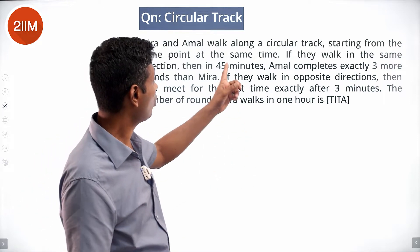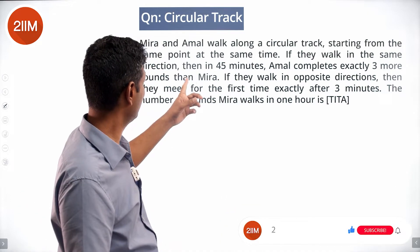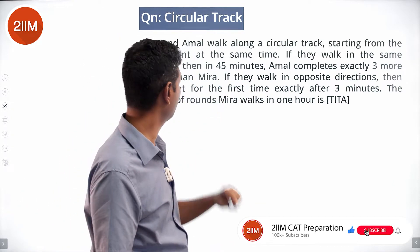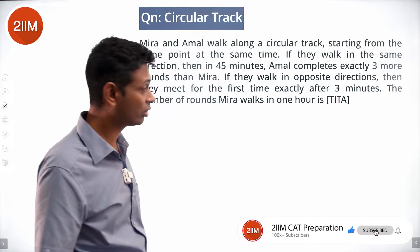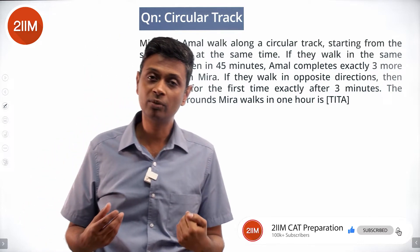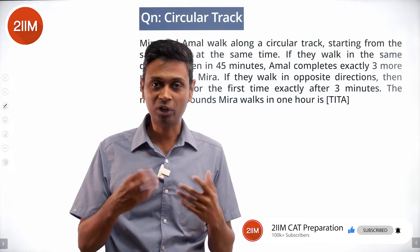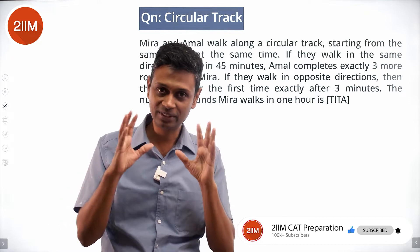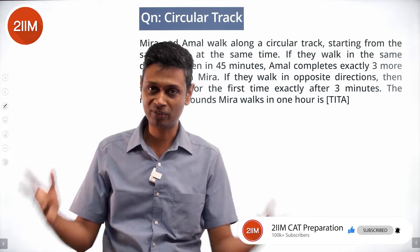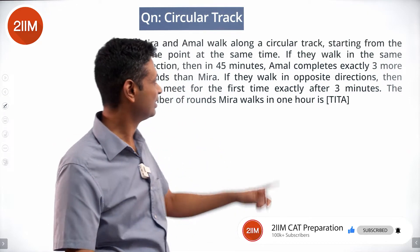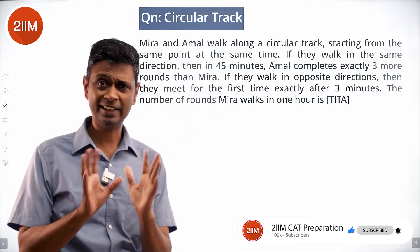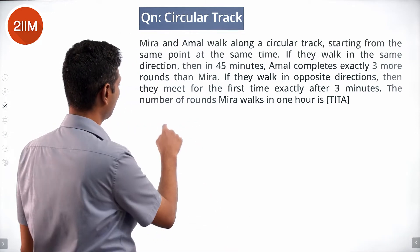If they walk in the same direction, then in 45 minutes Amal completes exactly three more rounds than Meera. If they walk in the same or opposite direction, in 45 minutes they can complete only the same number of laps — so if they walk in the same direction, I just didn't get that. Fine, so let's work it out.